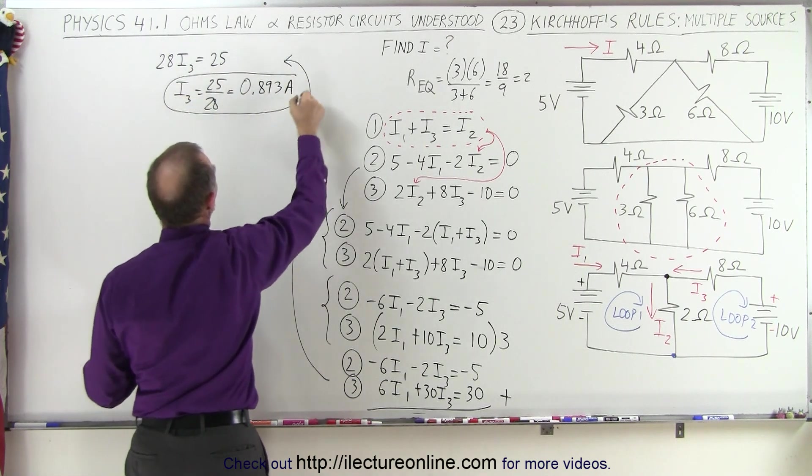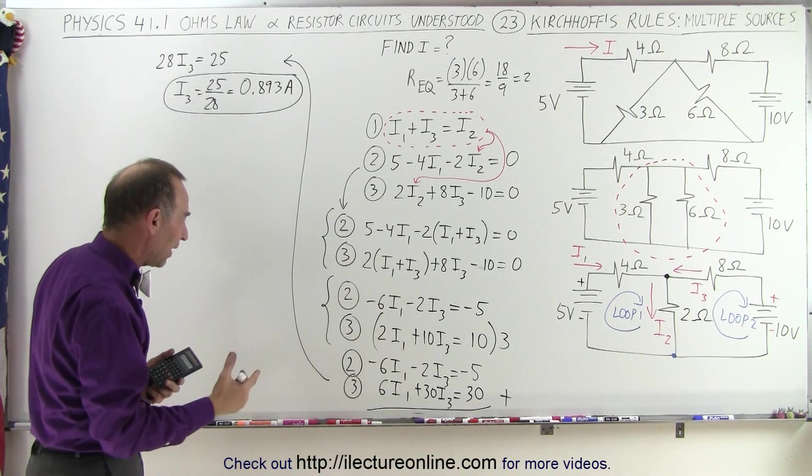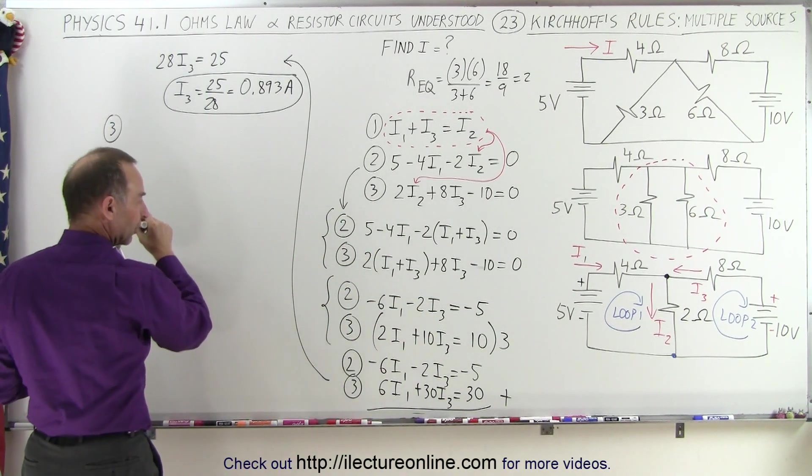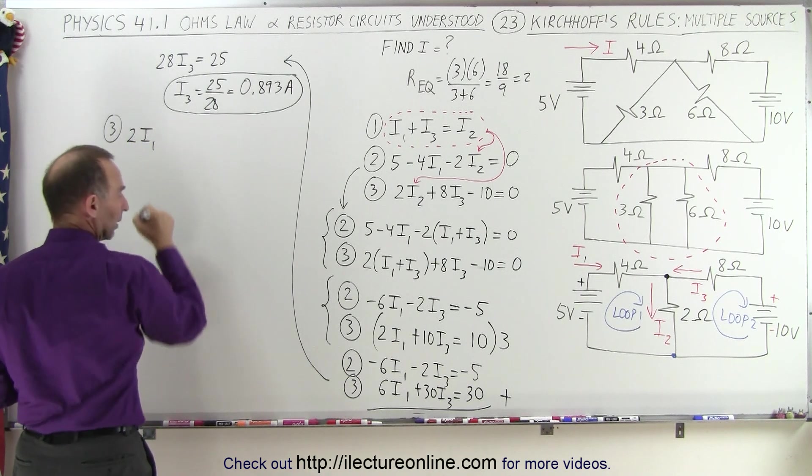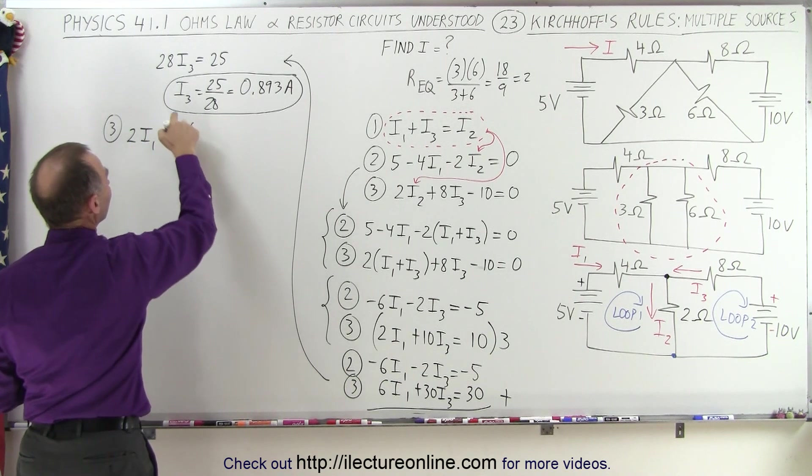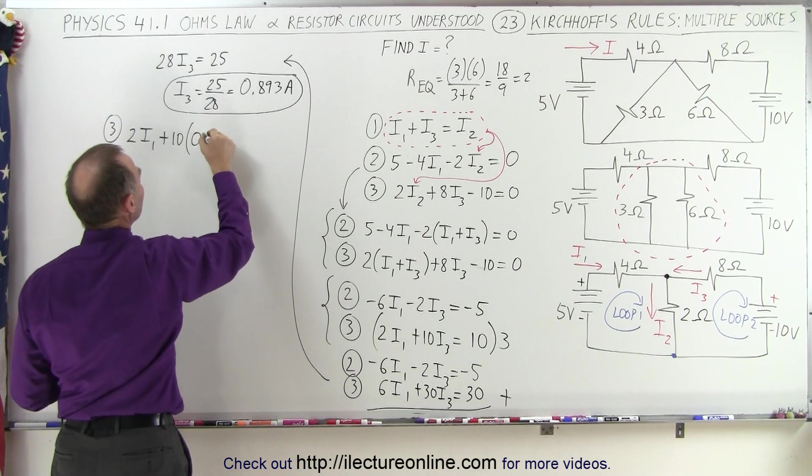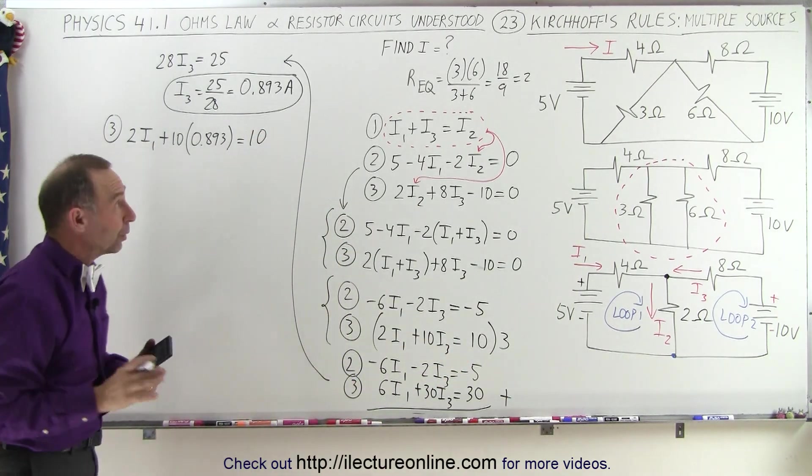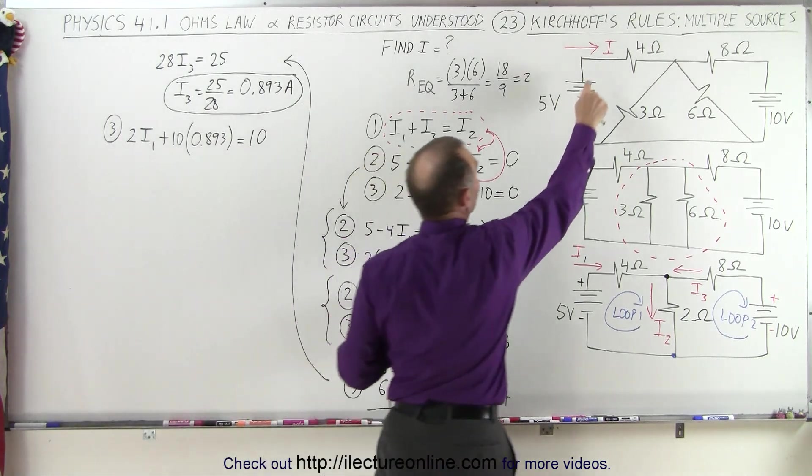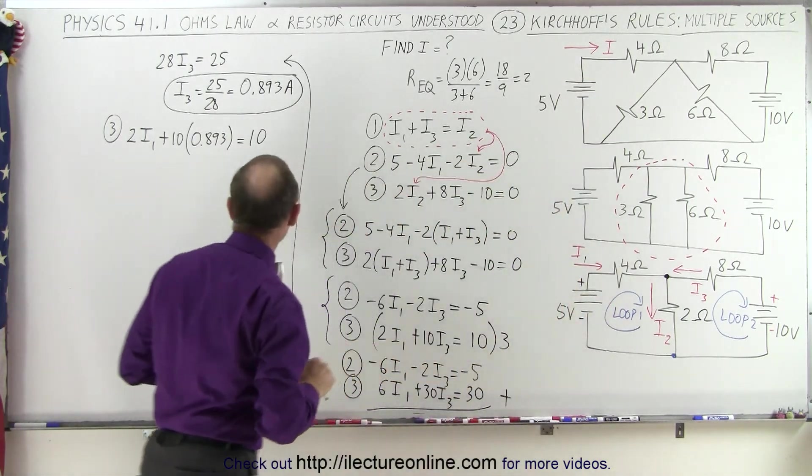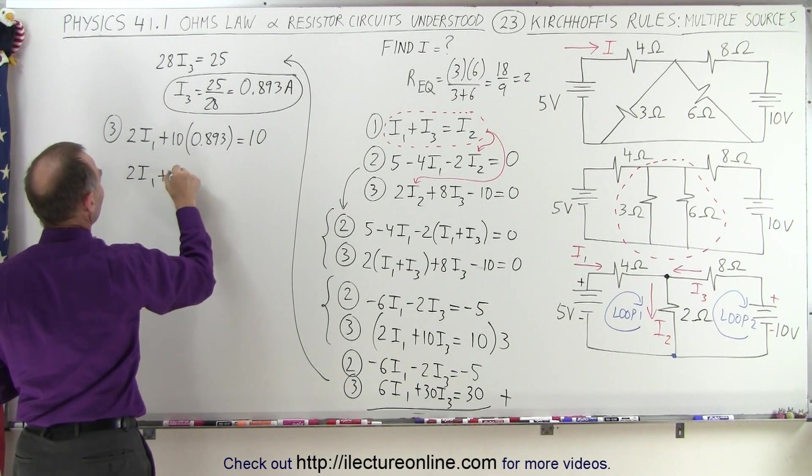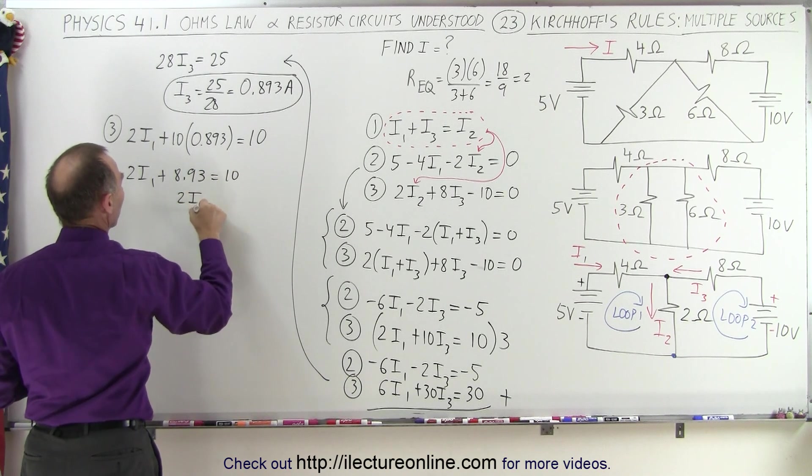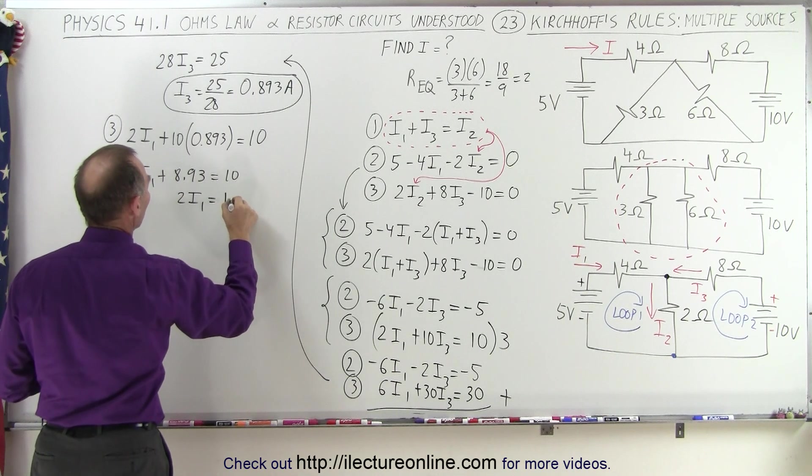So here we have the value for I3. We can now go ahead and use that to find the value for I1. Let's take this equation right here. So equation number three, that tells us that two times I1 plus 10 times I3, and I3 is equal to 0.893, is equal to 10. This allows us to find I1, which is ultimately what we're looking for, because the current I in this branch here is indeed equal to I1. So we have 2I1 plus 8.93 is equal to 10, or 2I1 is equal to 10 minus this, which is 1.07.